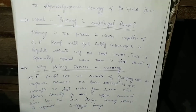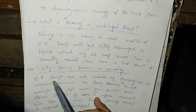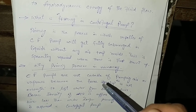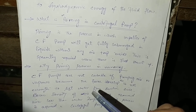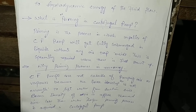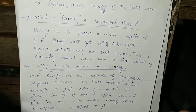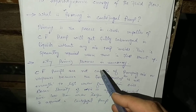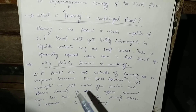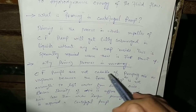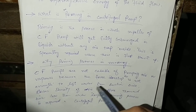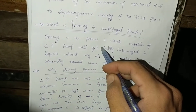Why is priming necessary in the centrifugal pump? Centrifugal pumps are not capable of pumping air or vapor, because the force developed by the air is not enough to lift the water from the suction side. The density of air is approximately one thousand times lesser than water. Therefore, the priming process is most important and required — we put water in the casing so the impeller gets fully submerged.